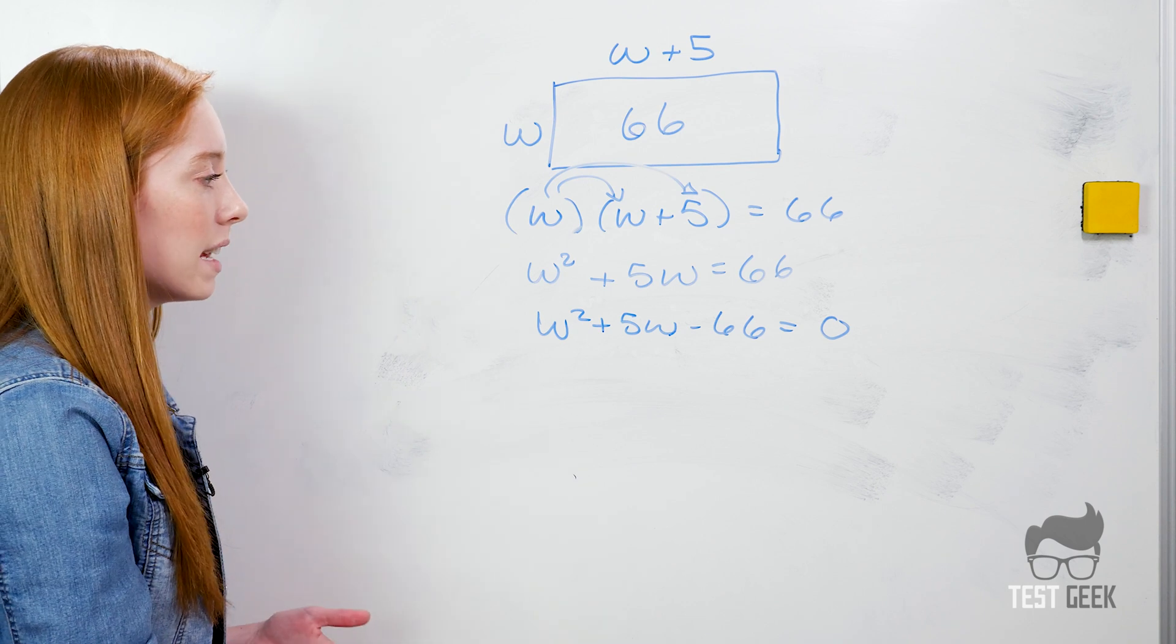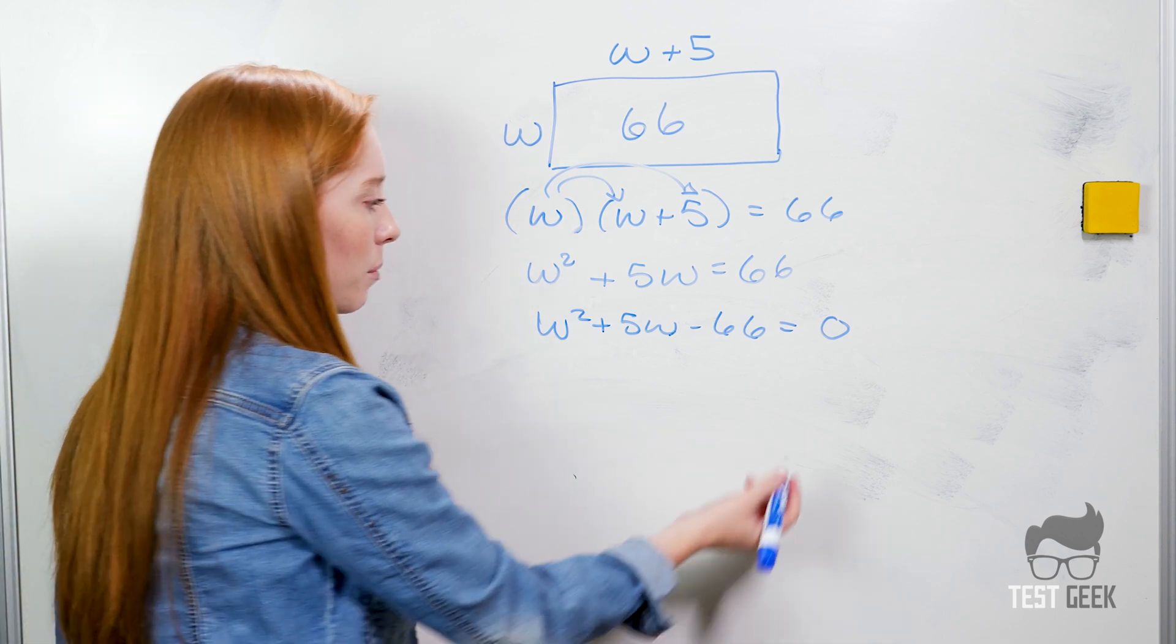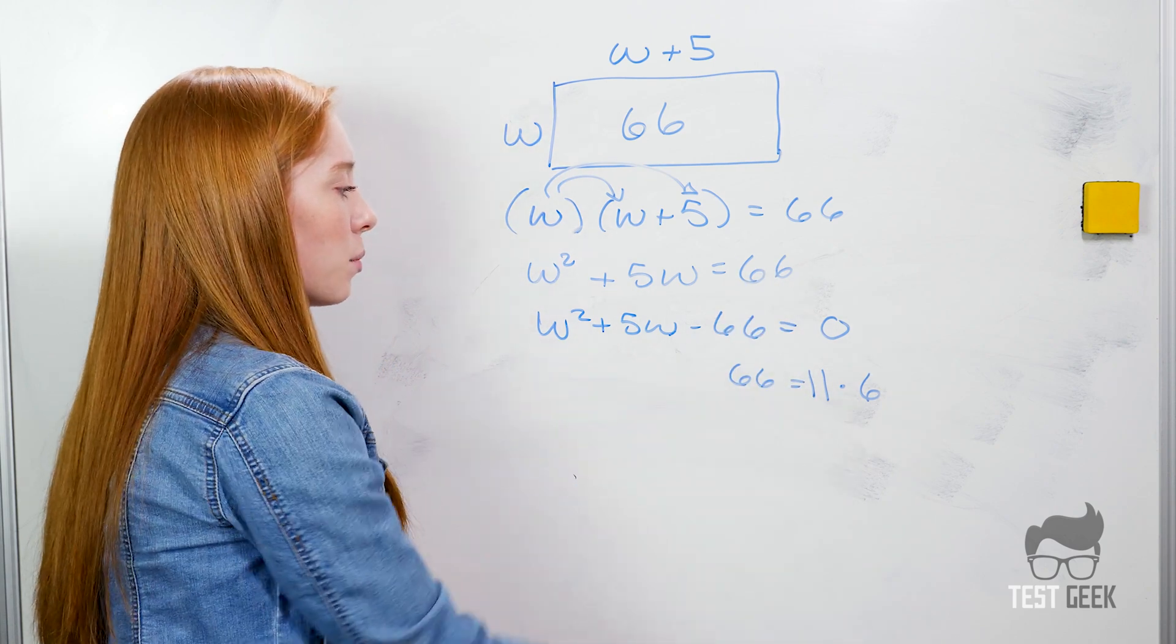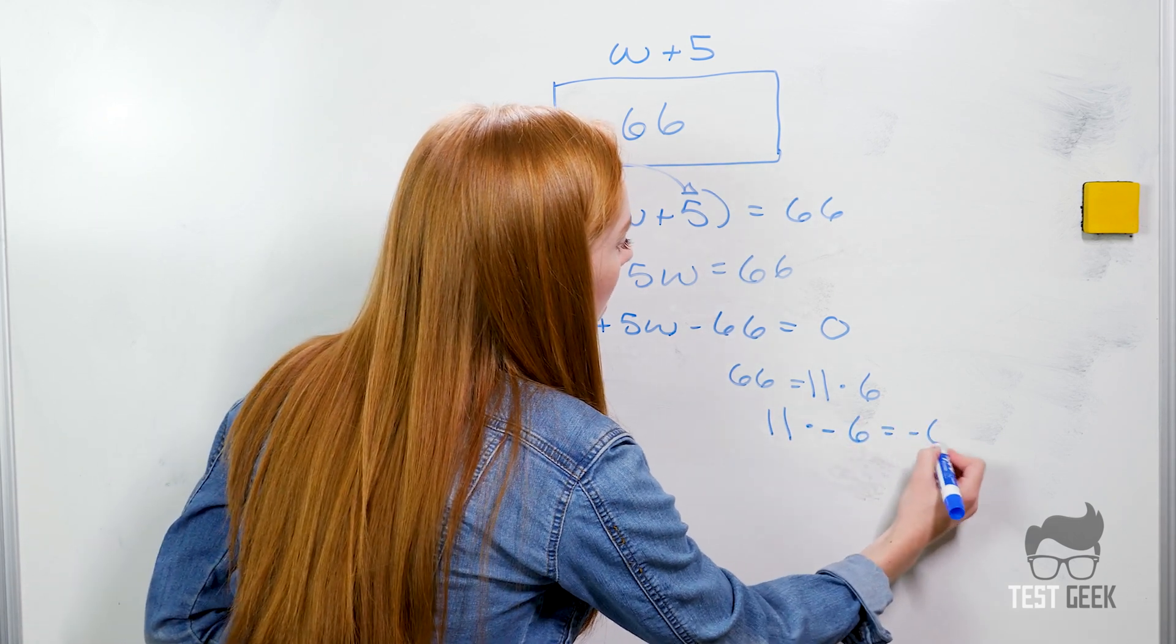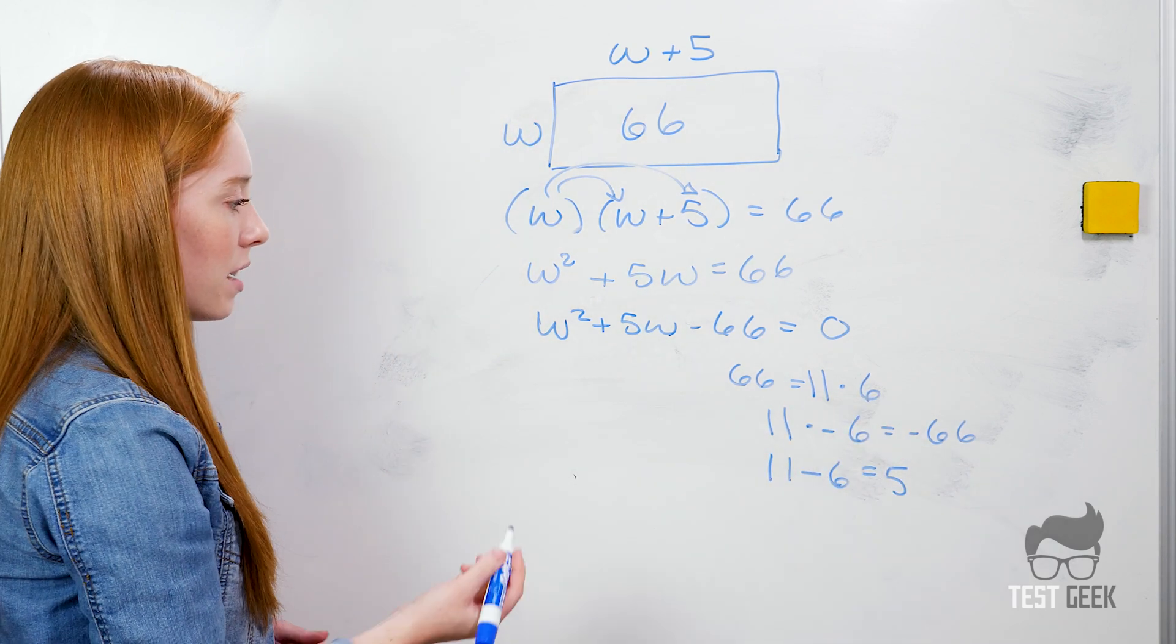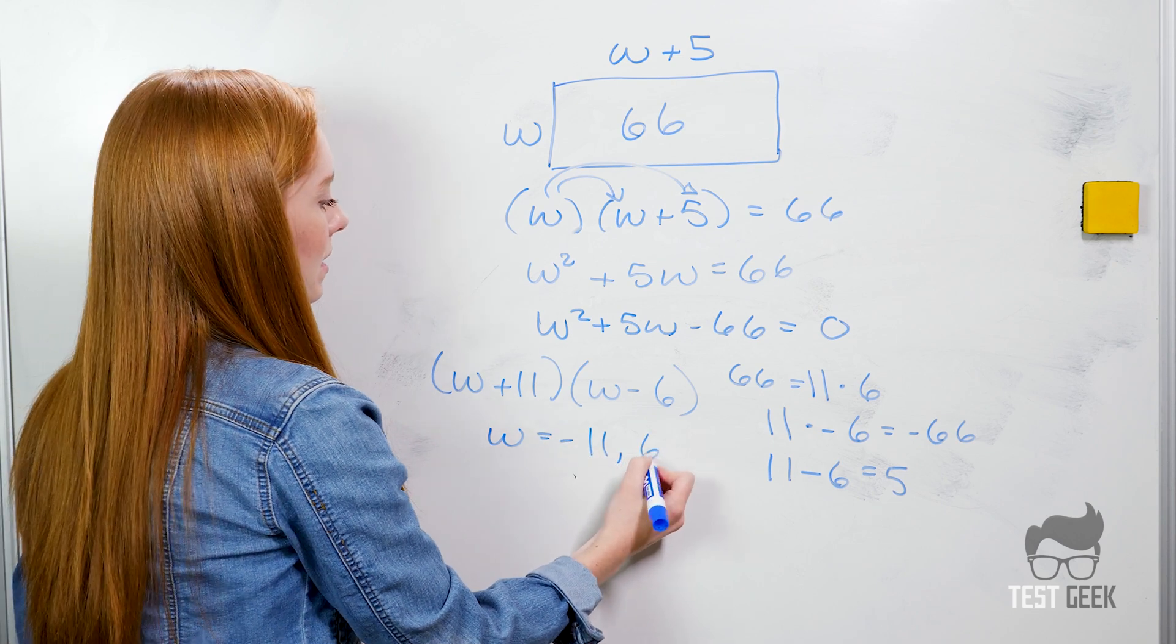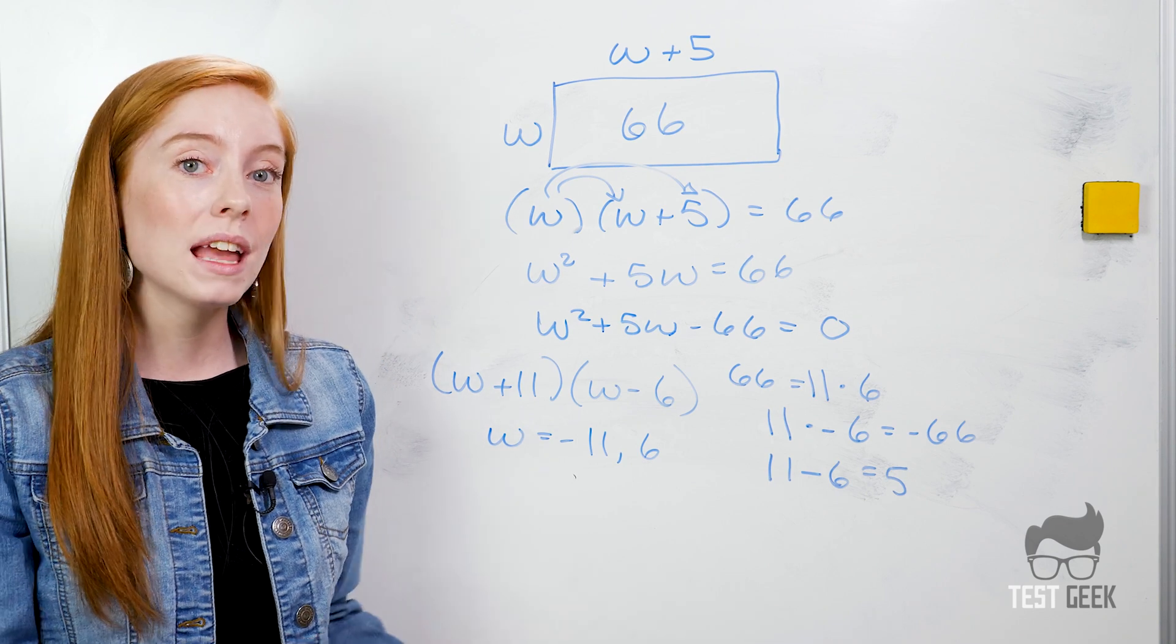We're looking for two numbers that multiply to give us negative 66 and that add up to give us 5. Let's start working through a few options so maybe 11 times 6, that equals 66. That's just an easy multiple that I came up with off the top of my head. So 66 equals 11 times 6 and we can get that to equal 5 if we make our 6 negative. 11 times negative 6 equals negative 66 and 11 plus negative 6 or 11 minus 6 equals 5. So we found our factors 11 and negative 6 so we have W plus 11 times W minus 6. Our answers are W equals negative 11 and 6 but we can't have a negative width. So our only answer that makes sense here is that the width has to be 6.